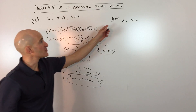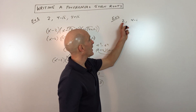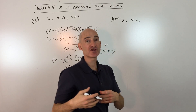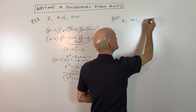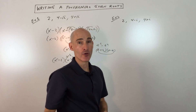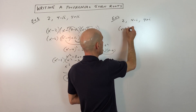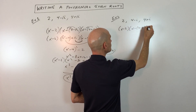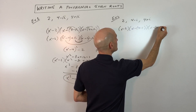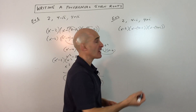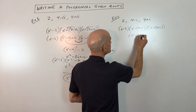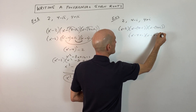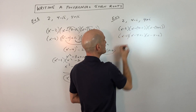Let's look at another example. Here they're telling us that the roots are 2 and 4 minus i. So automatically, if the coefficients are real, we know that 4 plus i will also be a root. To write the factors, it's going to be x minus the root for each one. We're going to do the same thing as before — distribute the negative — so that's x minus 4 plus i and x minus 4 minus i. And I'll bring down the x minus 2.